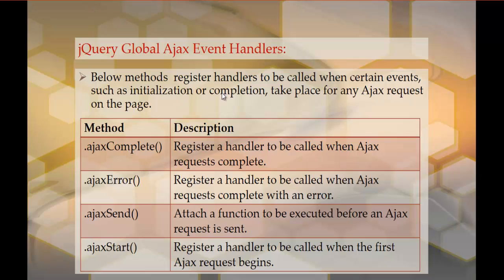You have to understand this clearly: these event handlers are going to trigger for any Ajax request on the web page. Suppose I have two buttons on the web page and clicking each button sends an Ajax request. On the successful completion of any Ajax request, I need to push a pop-up message saying 'Ajax request is completed' for both buttons — so I need to write common code. I can do that with the global Ajax event handler methods like ajaxComplete.